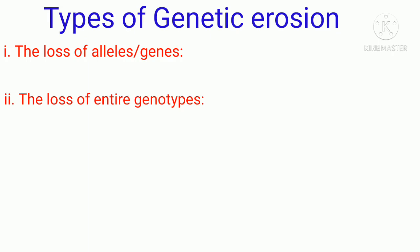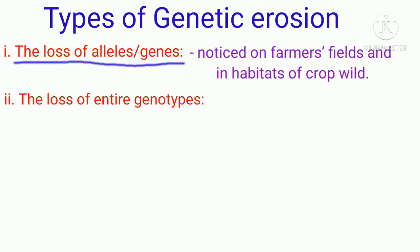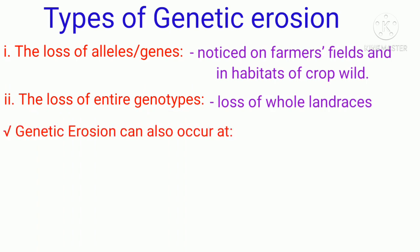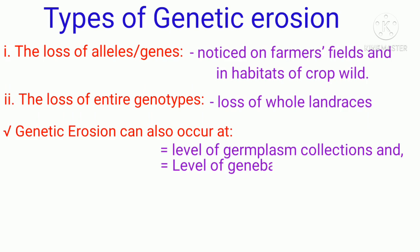There are two types of genetic erosion: loss of alleles or genes, and the loss of entire genotypes. The loss of alleles or genes is noticed on farmers' fields and in habitats of crop wild relatives. Whereas the loss of entire genotypes means the loss of whole landraces. Genetic erosion can also occur at another level — at the level of germplasm collections and gene banks.